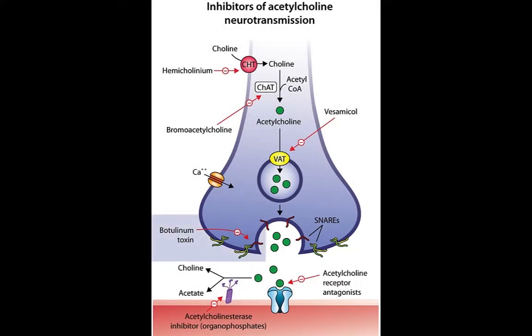Botulinum toxin works here by inhibiting acetylcholine release from the presynaptic neurons. Botulinum toxicity causes descending skeletal muscle paralysis, which can start from cranial nerves and descend downwards.